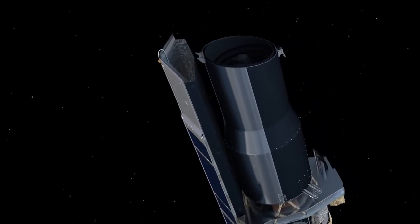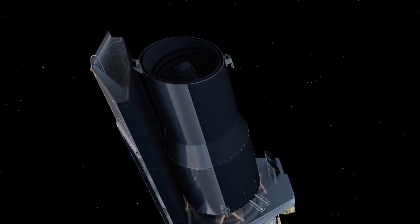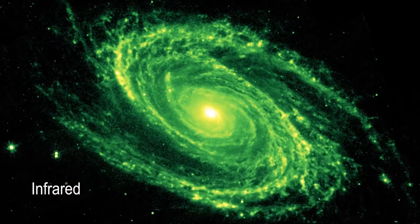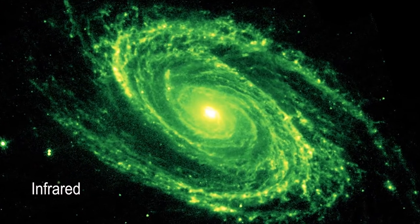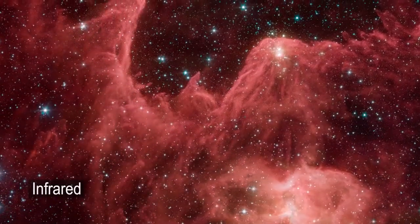Spitzer instruments allow to perform astronomical imaging and photometry from 3.6 to 160 micrometers, spectroscopy from 5.2 to 38 micrometers, and spectrophotometry from 5 to 100 micrometers.